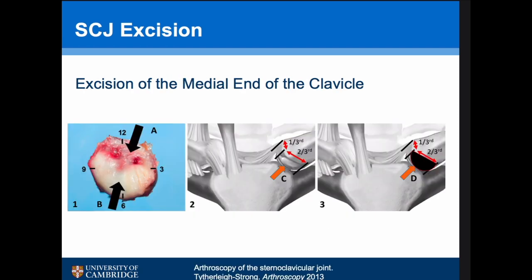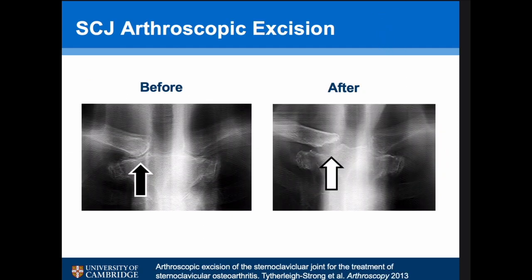The actual articular part of the medial end of the clavicle is just the lower two-thirds, so it's possible to remove this as an intraarticular arthroscopic operation — a day case procedure. This is the before and after tomogram: on the left you can see the arthritic lower two-thirds of the joint, and on the right you can see where that portion has been removed.